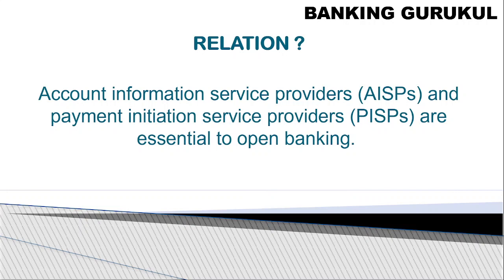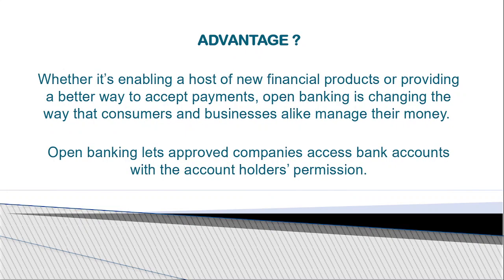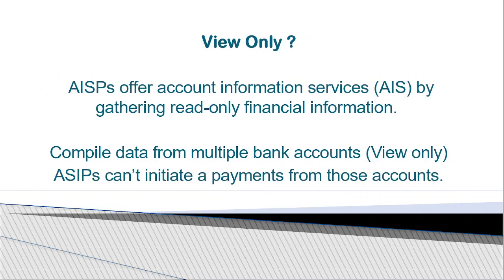These two things — AISPs and PISPs — are essential for open banking. I have already prepared a detailed video on open banking. The advantage of AISPs is that if you have multiple accounts in multiple banks, you can access everything in one app. You must first give access to the AISP, which is view-only access.